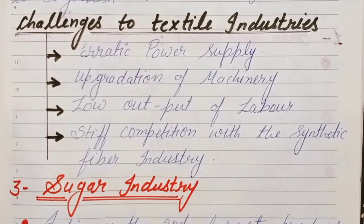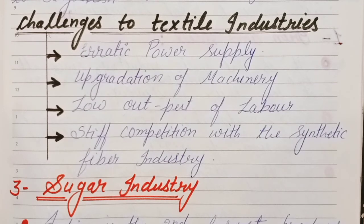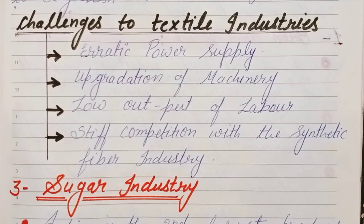Remember these challenges for 2–3 mark questions or MCQs. The four challenges are: erratic power supply, upgradation of machinery, low output of labor, and stiff competition with the synthetic fiber industry.